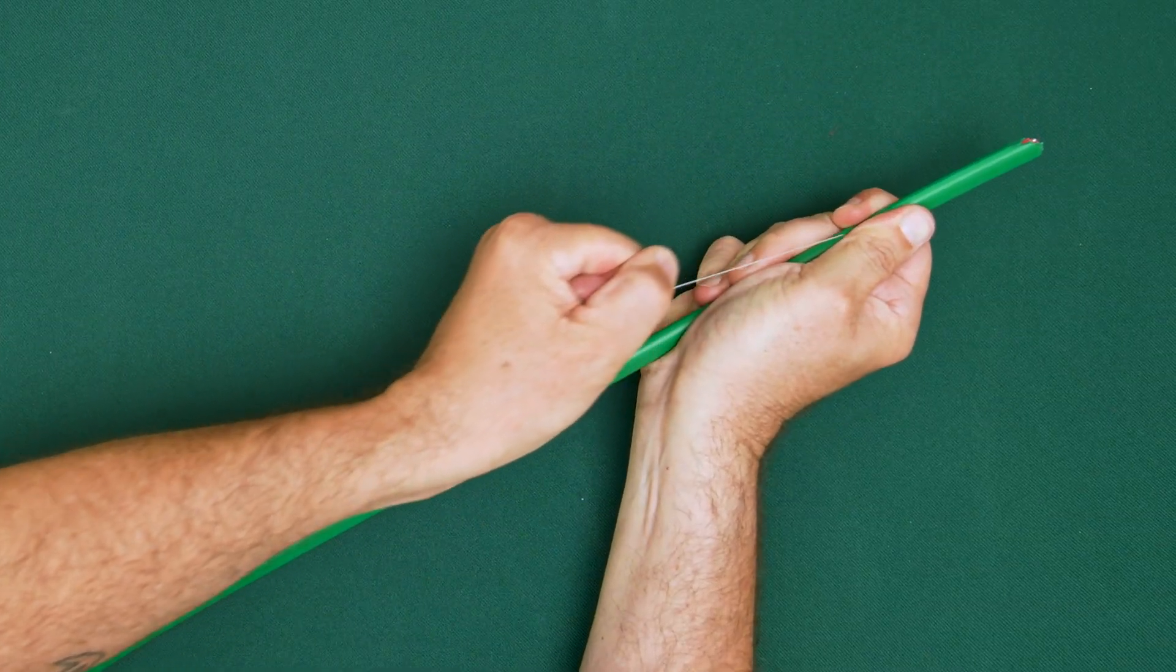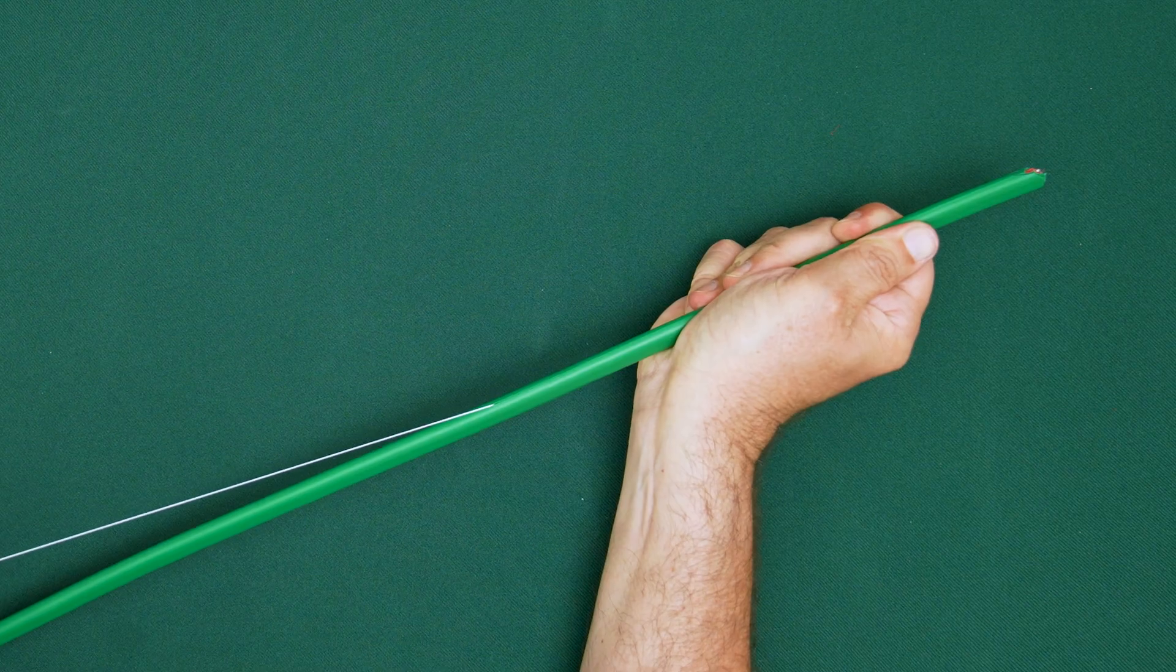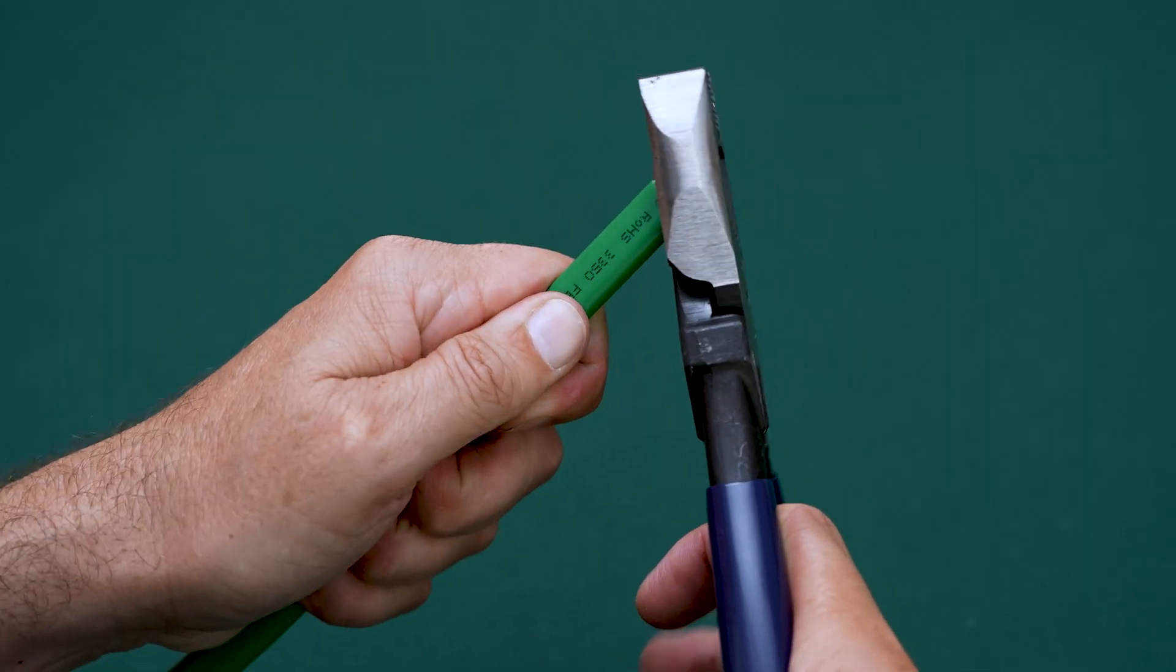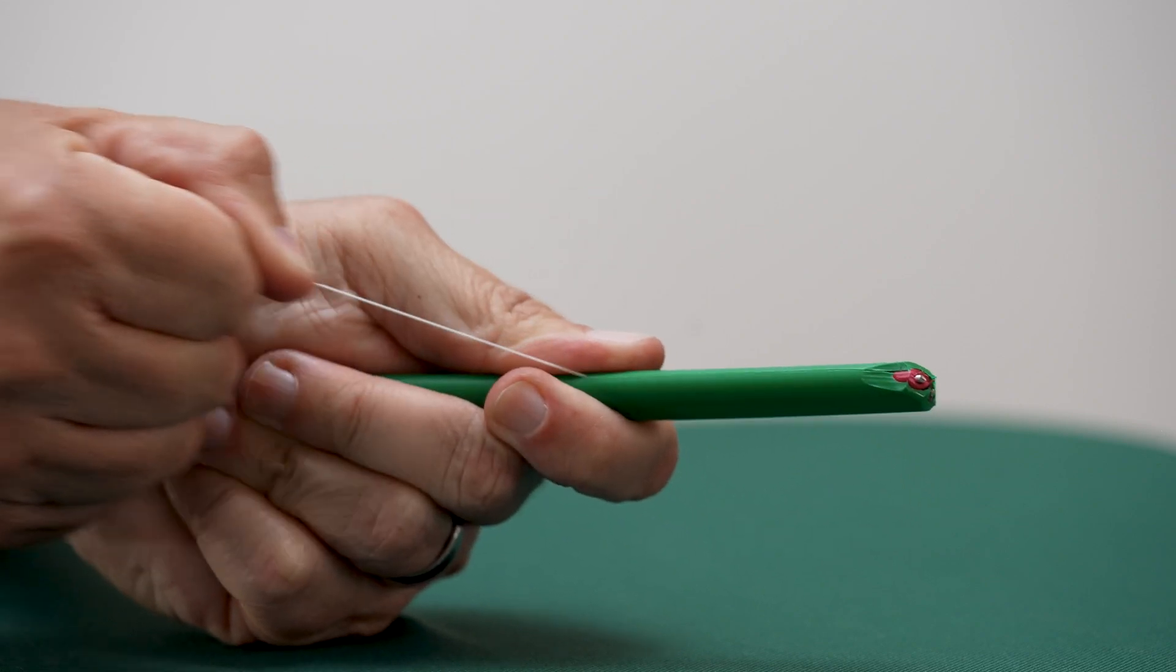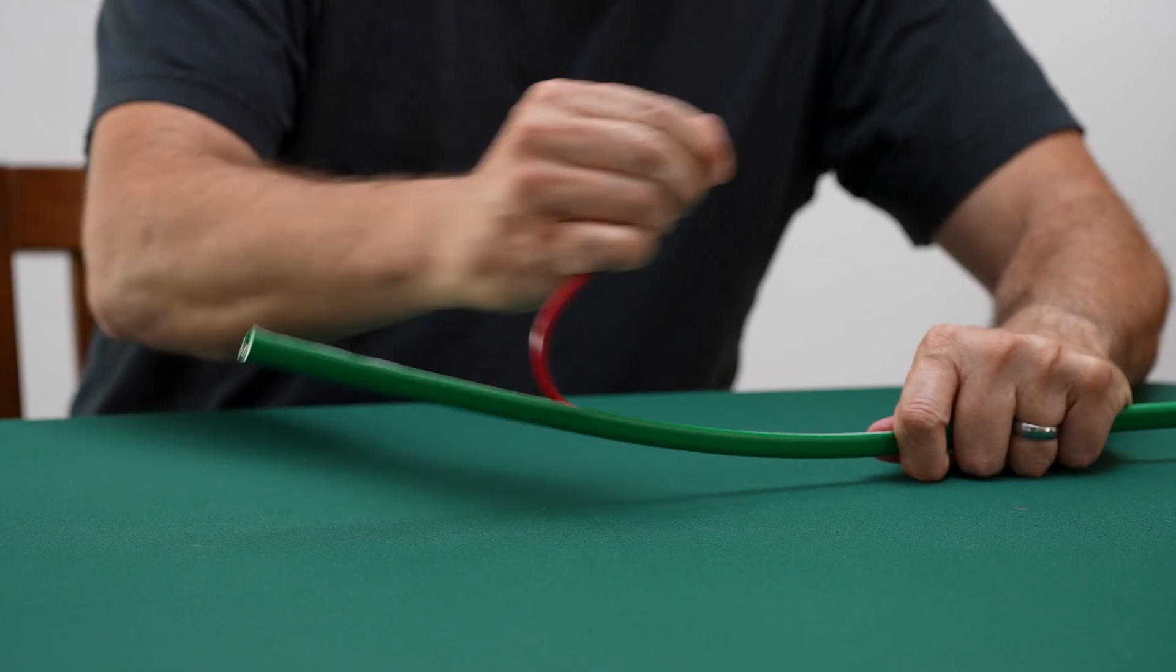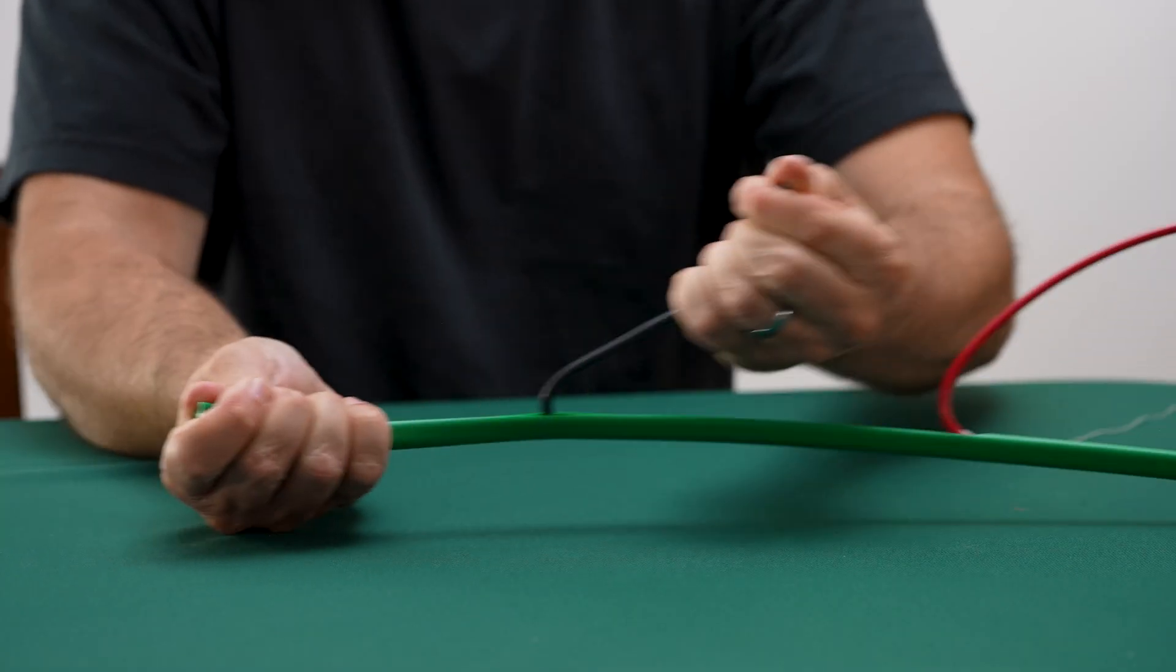Another method available on some Maxi cables is the embedded pull cord. To use it, make a small angled cut to expose the cord. Then pull it firmly along the jacket. Peel back the jacket to fully clear the conductors.